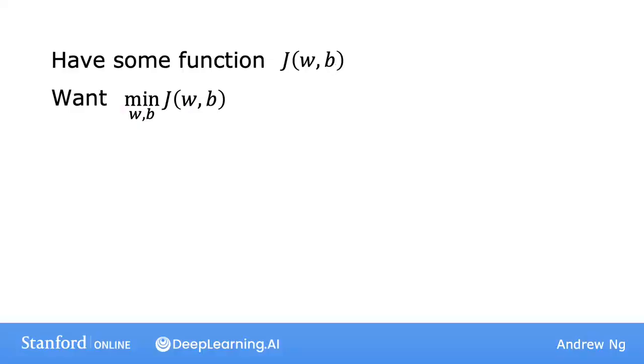Here's an overview of what we'll do with gradient descent. You have the cost function J(w,b) that you want to minimize. In the example we've seen so far, this is a cost function for linear regression. But it turns out that gradient descent is an algorithm that you can use to try to minimize any function.